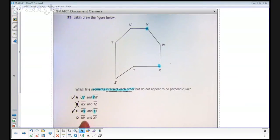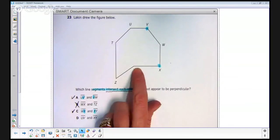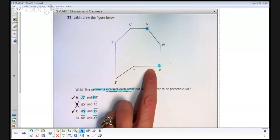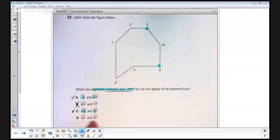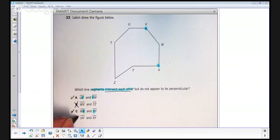And then finally, answer choice D, I've got segment UV and XY. UV and XY appear to be parallel, actually. They do not have any points in common. They have no letters in common in their names. These are not intersecting line segments.